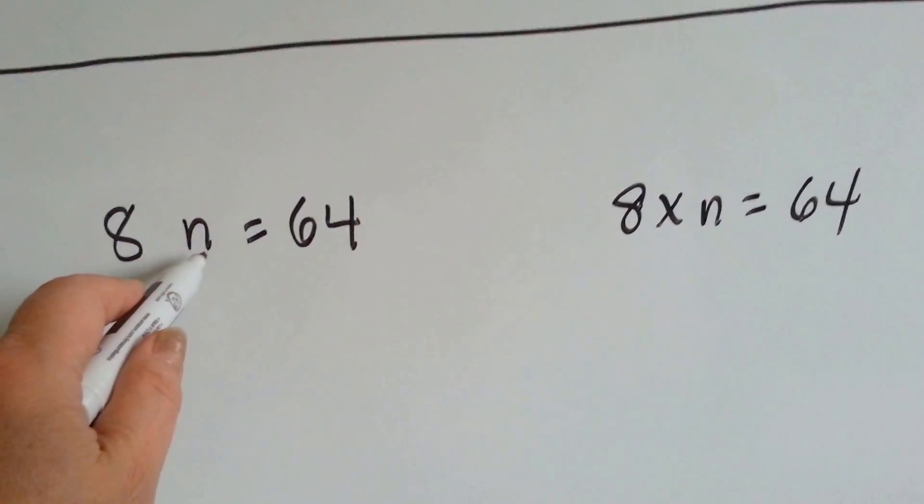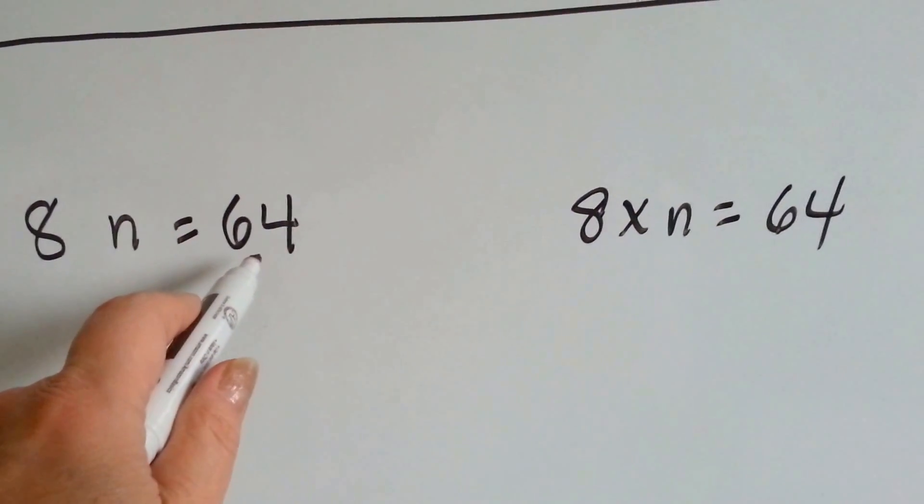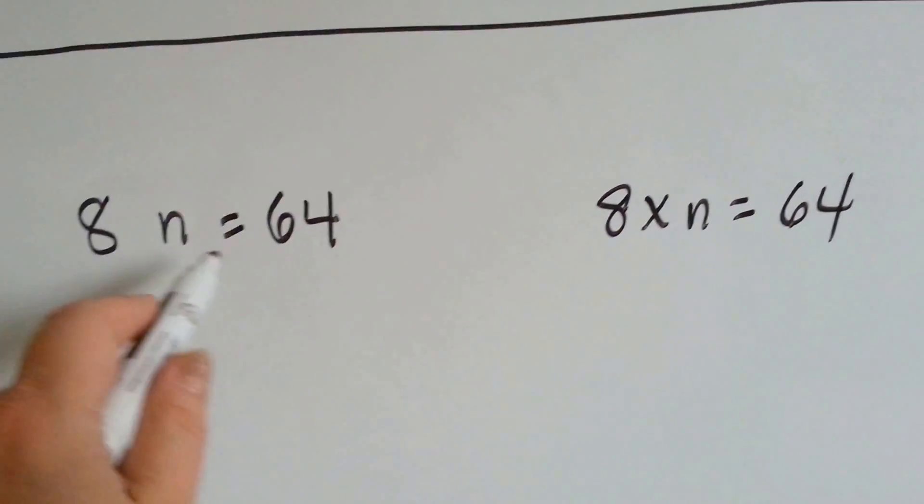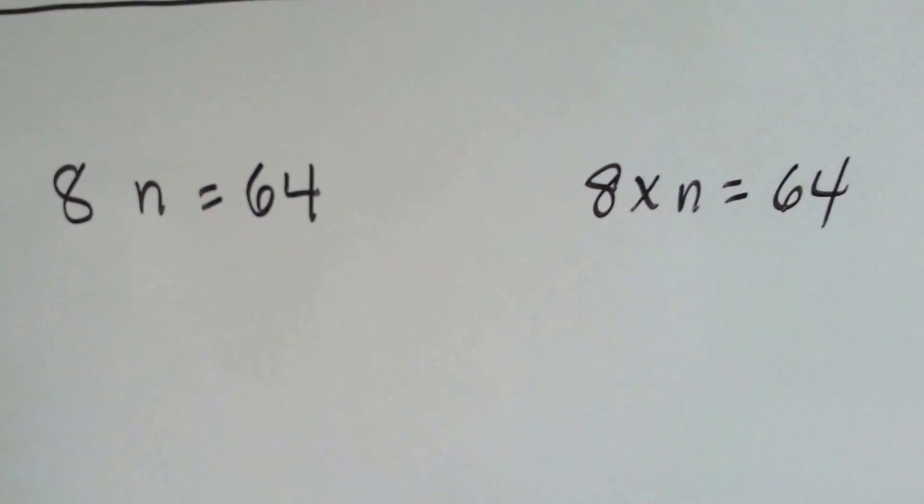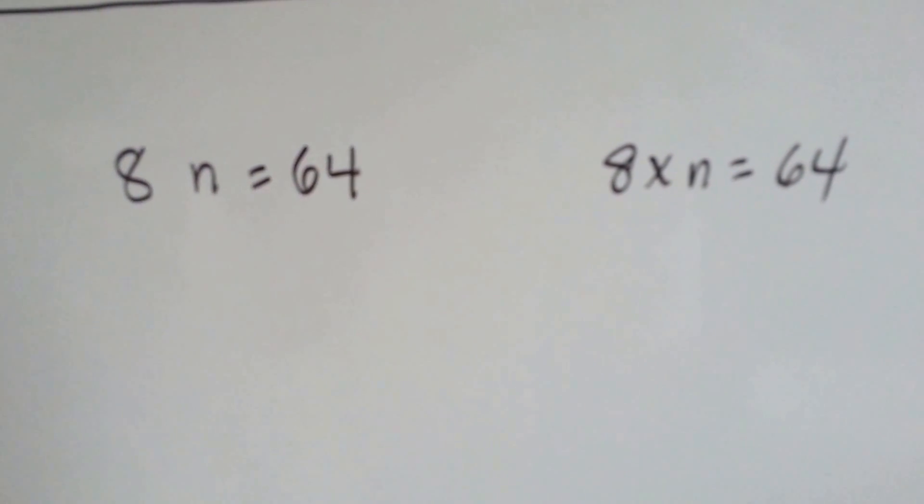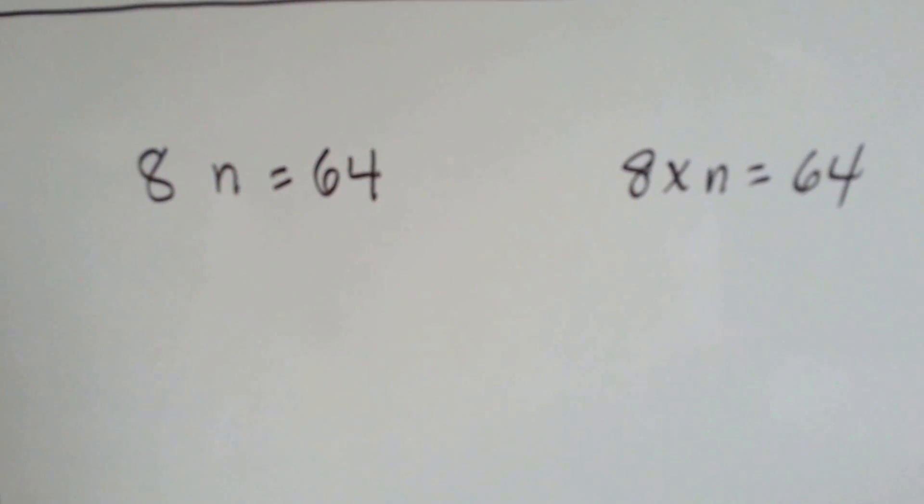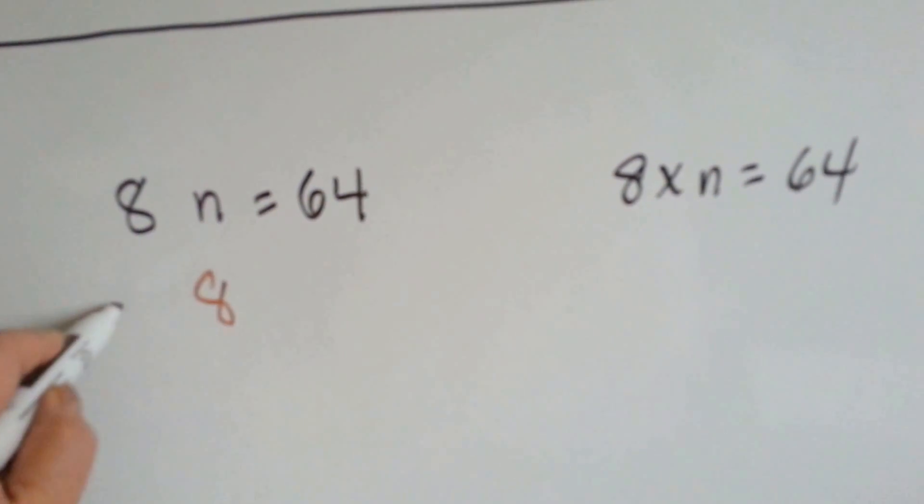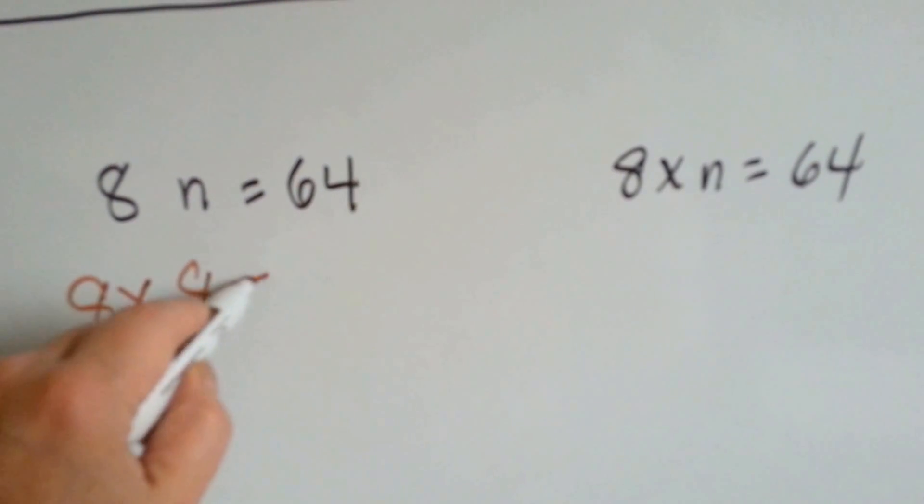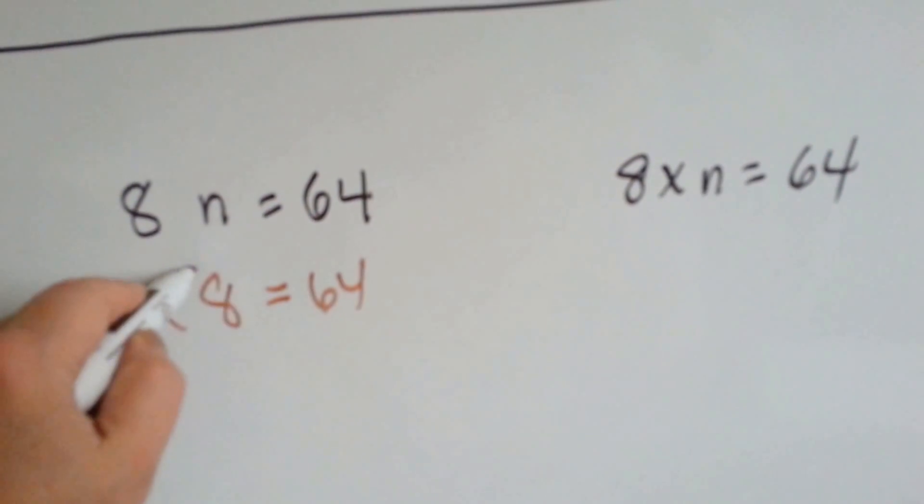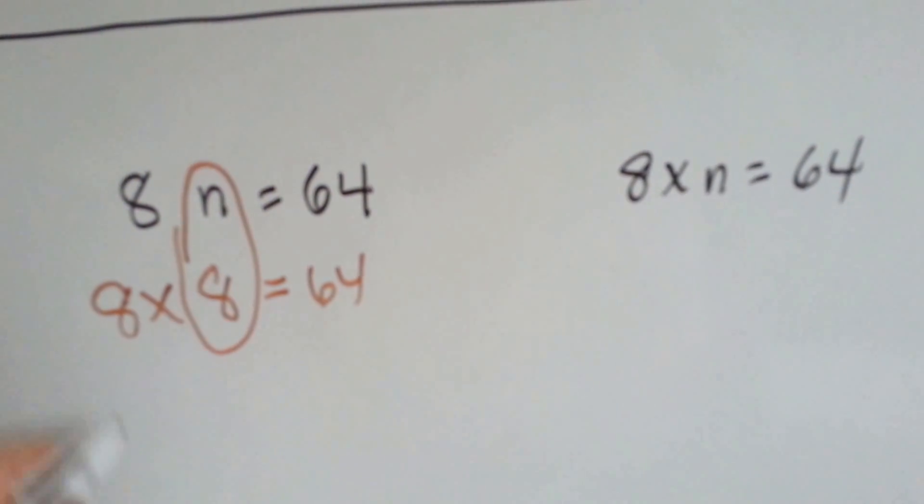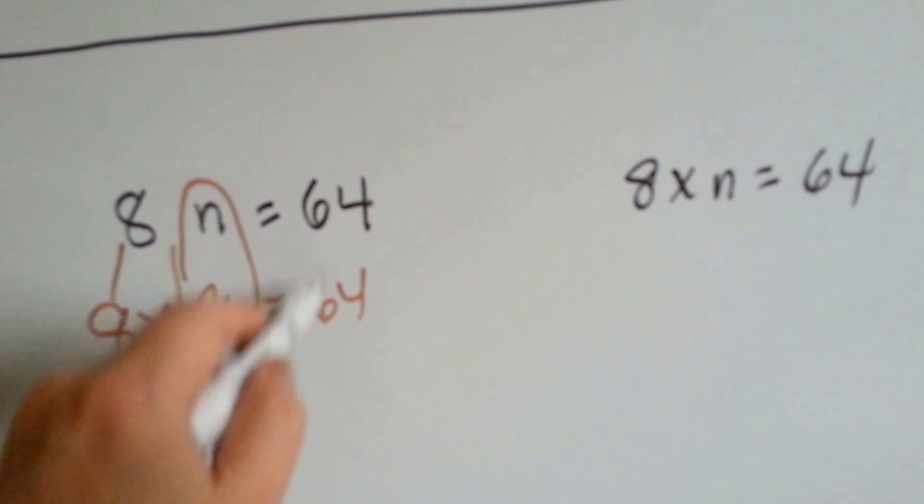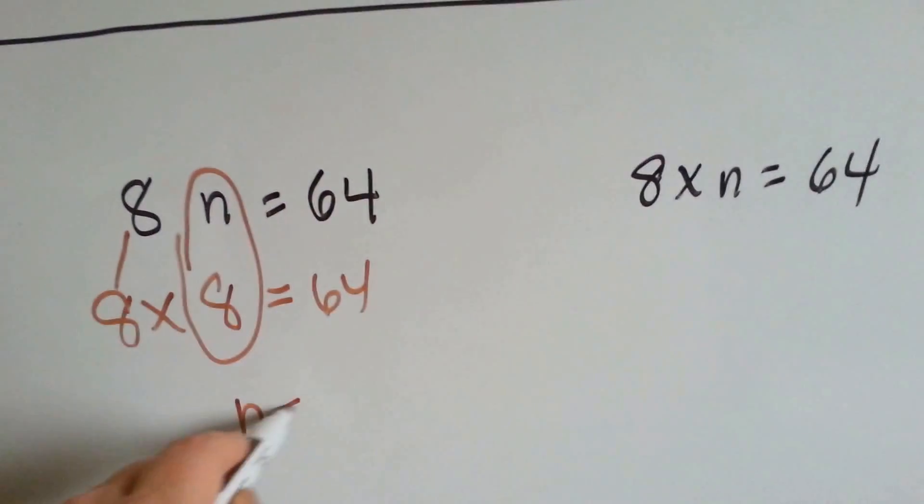Let's try this one. Eight times a number. Eight times a number is sixty-four. Eight times what is sixty-four? Do you know your eight times table? Eight times eight is sixty-four. So, the n is eight. Here's an eight. The n is eight, and it equals sixty-four. n equals eight.